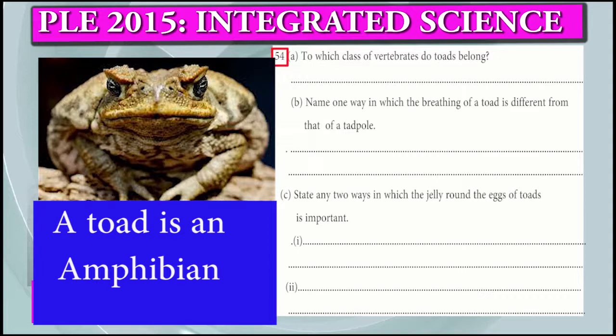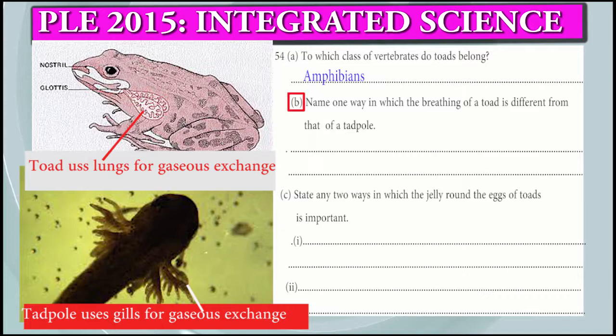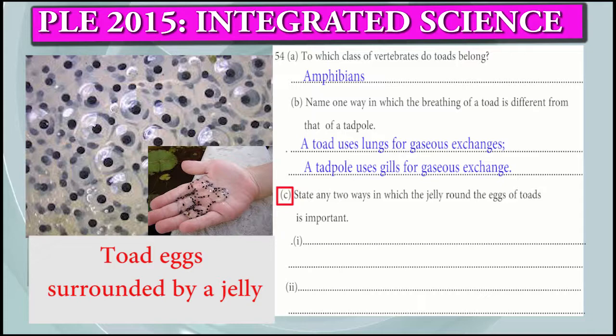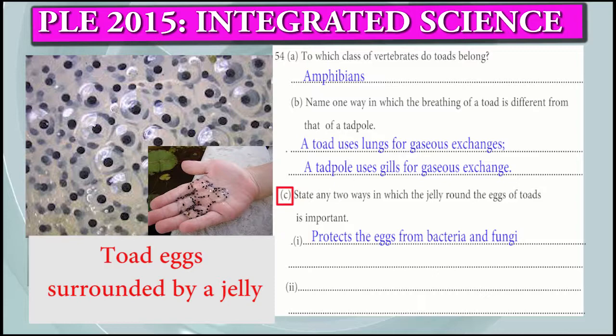Question 54a: To which class of vertebrates do toads belong? Amphibians. Part B: Name one way in which the breathing of a toad is different from that of a tadpole. A toad uses lungs for gaseous exchange. A tadpole uses gills for gaseous exchange. Part C: State ways in which the jelly around the eggs of toads is important. It protects eggs from predators. It protects eggs from injury. It protects eggs from bacteria and fungi. It keeps the eggs floating.